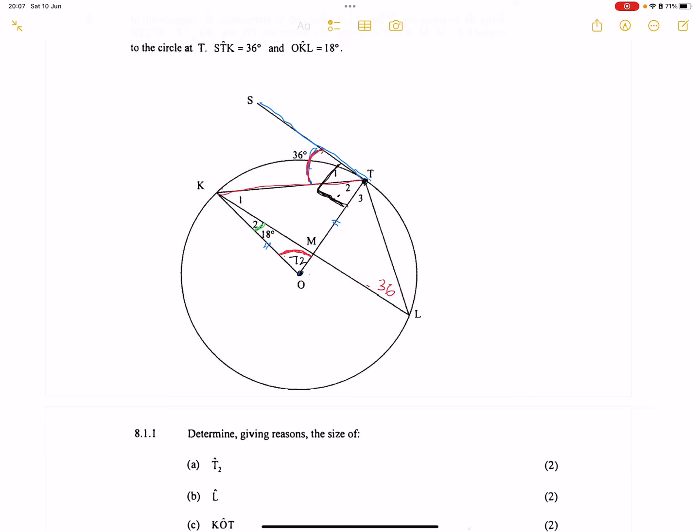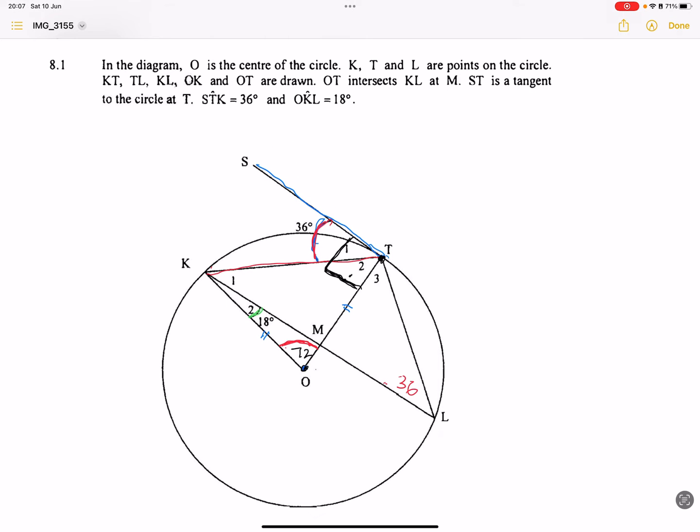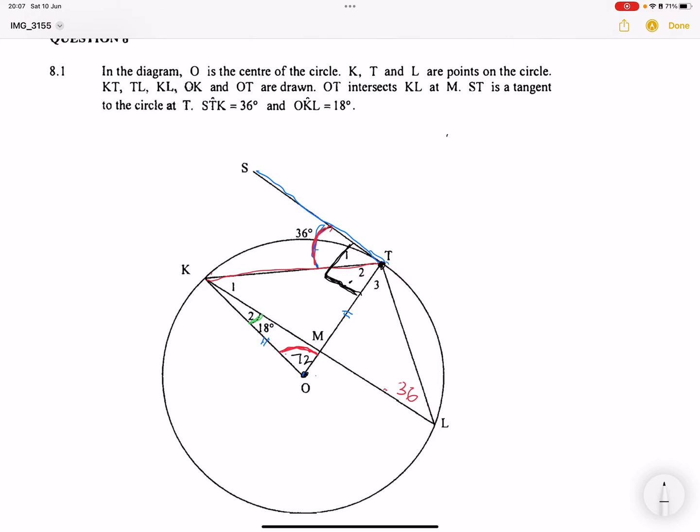That means we would be able to calculate T2, and as a result, if we needed to, we can calculate K1 because K1 plus K2 would be equal to T2. In this case, let's try and answer the questions that we are asked. The first one, they say to us, determine giving reasons the size of T2. I'm going to write it over here. So that's 8.1.1.